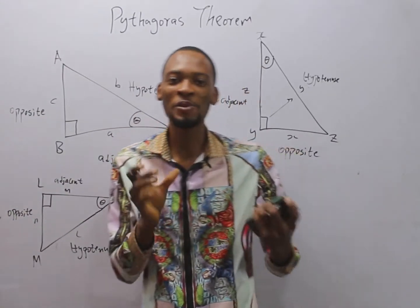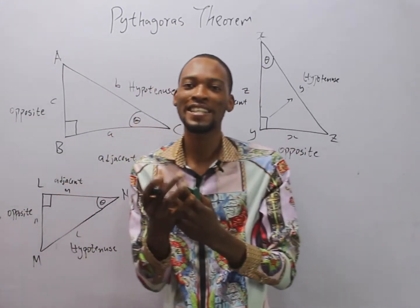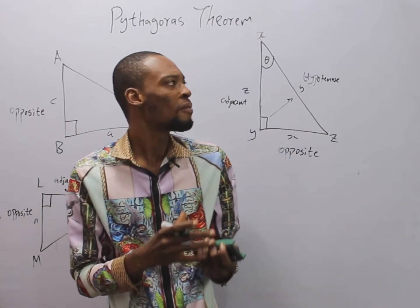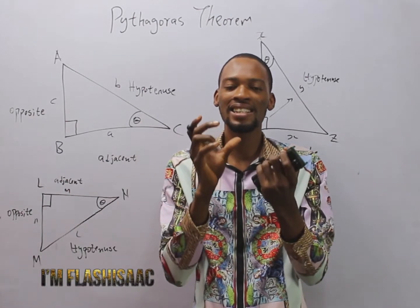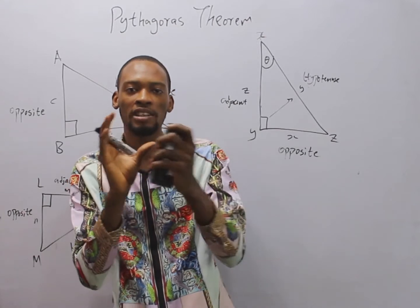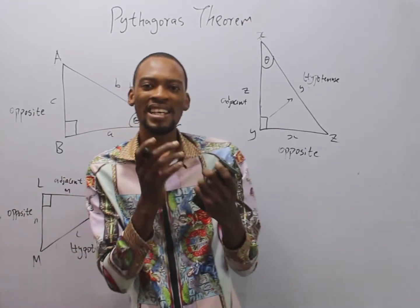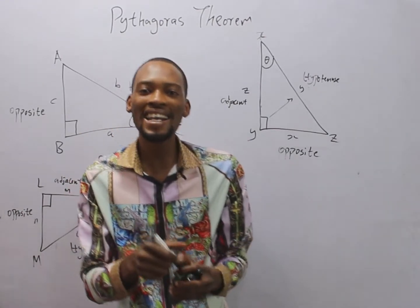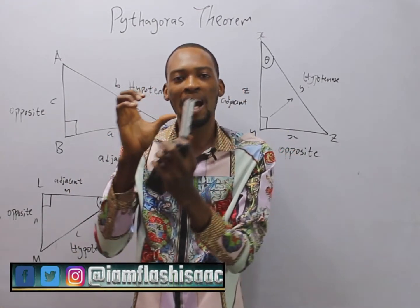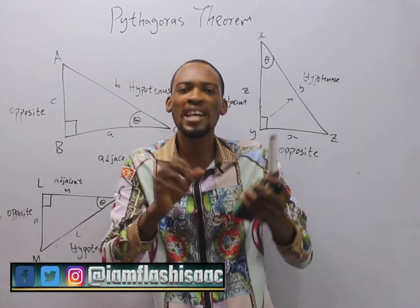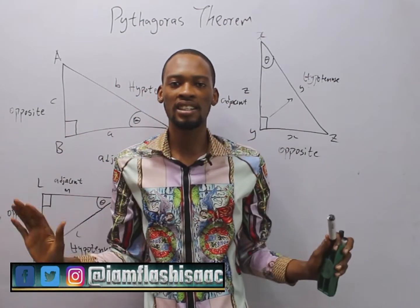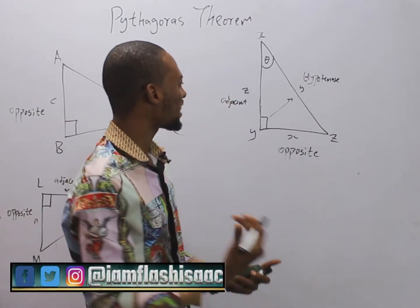Hello guys, welcome to Mathematics Class with Flash Isaac. Today I'll be taking you through Pythagoras' theorem. Pythagoras was an ancient Greek philosopher. In his theory, known as Pythagoras' theorem, he says that in a right-angled triangle, the square of the hypotenuse equals the square of the opposite plus the square of the adjacent.